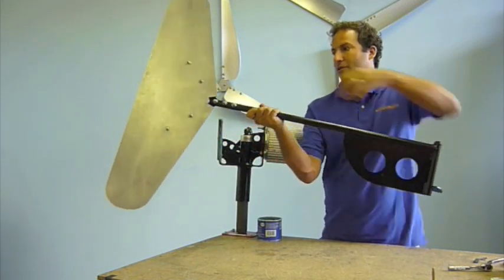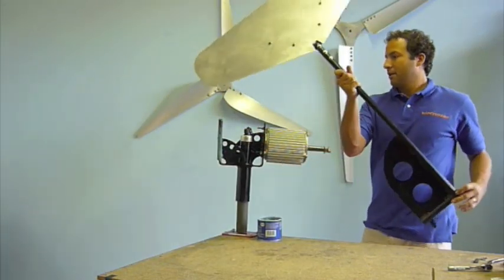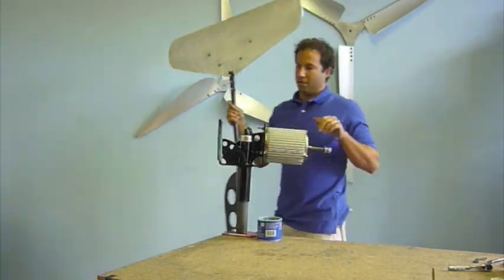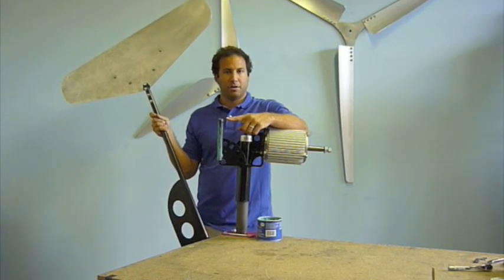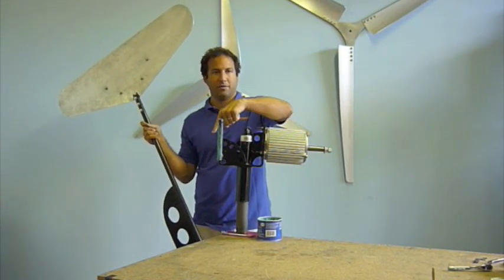So once you have all this stuff in the back bolted on, the tail assembly can be put onto this pivot bar. Before we actually put it on, we did this out of the video, but we applied grease all over the pivot bar.